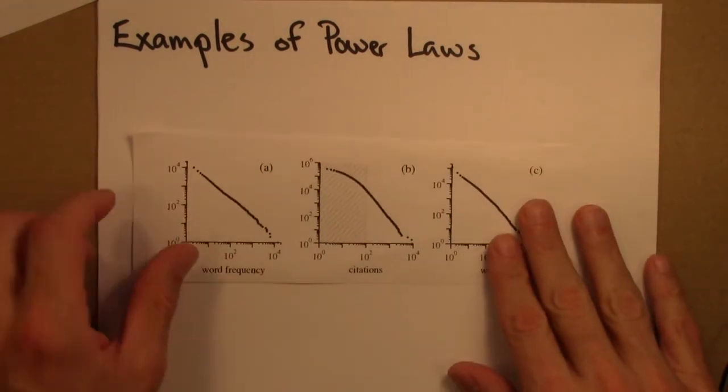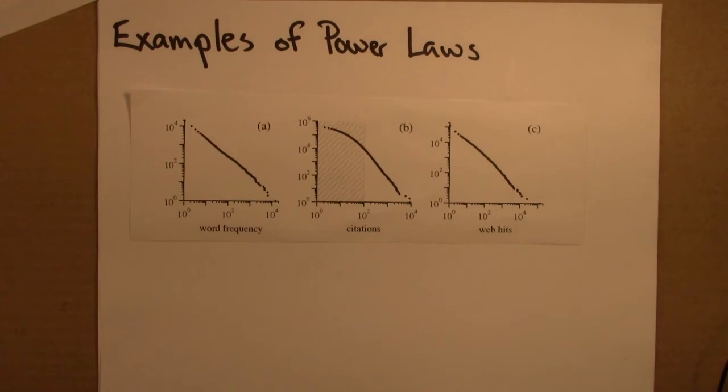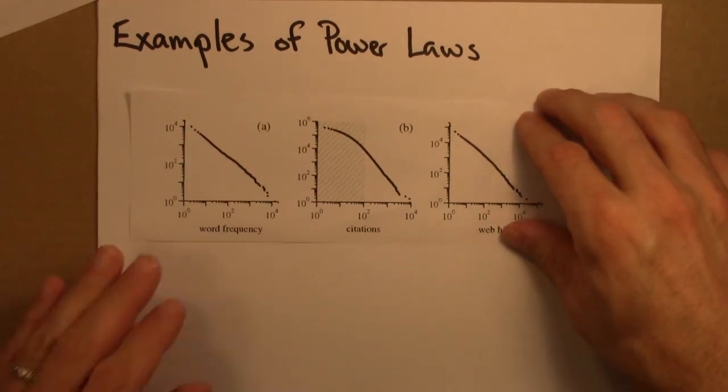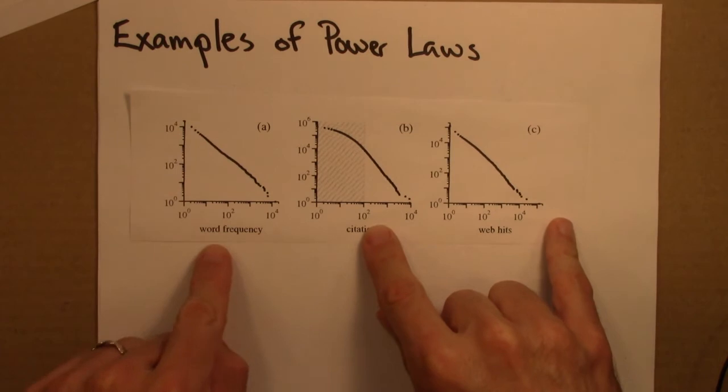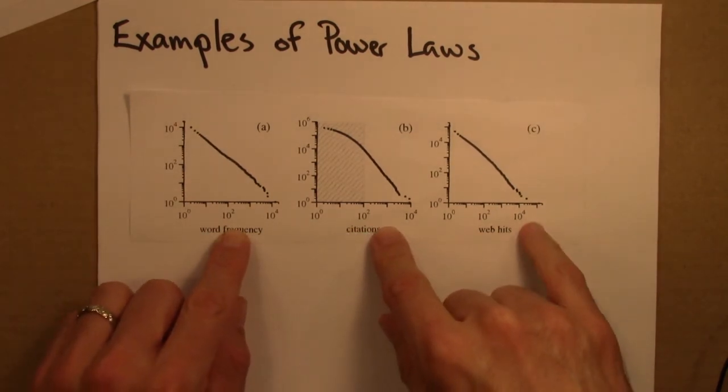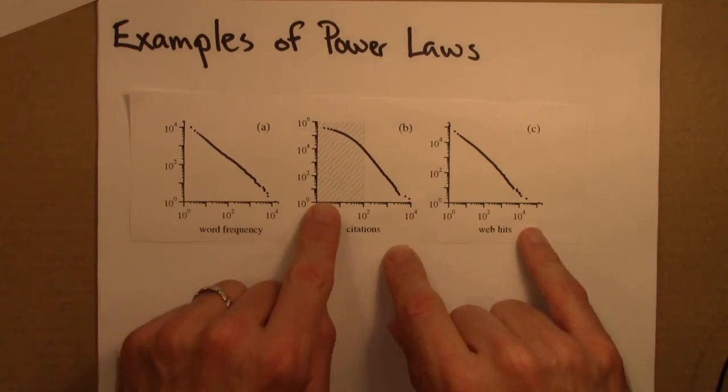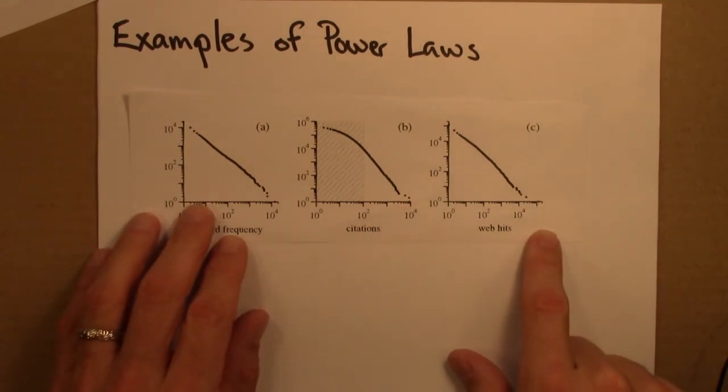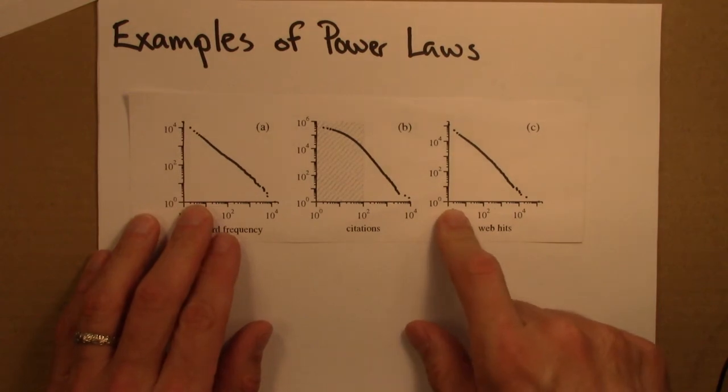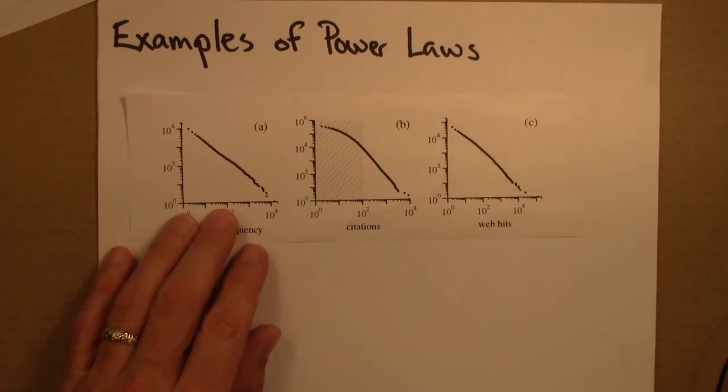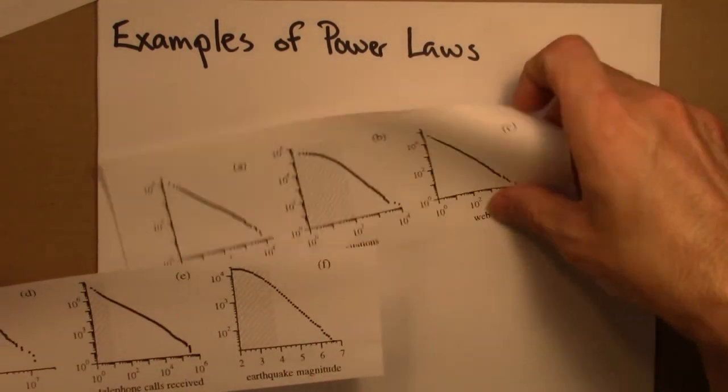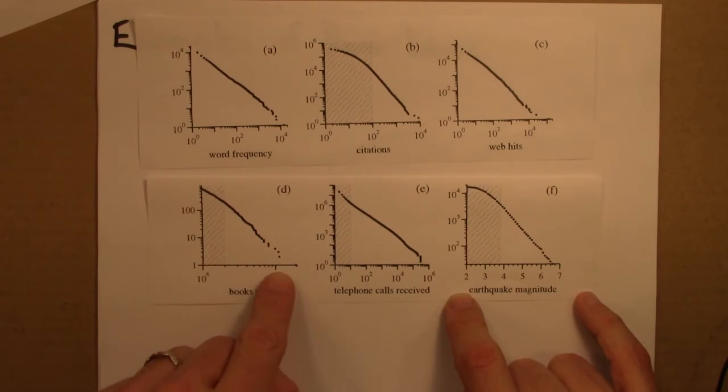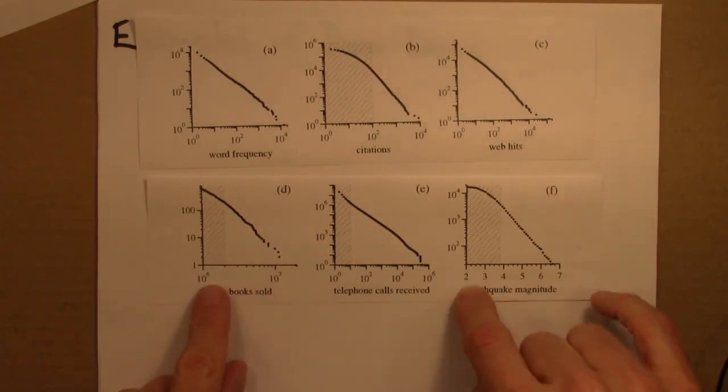So here, these are all from, this is figure 4 in the paper by Newman. So these are all rank frequency or cumulative distribution plots. This is the one we've been looking at. This is word frequency from Moby Dick. Here are citations for scientific papers. There are lots and lots and lots of papers that are cited very few times, and then a few number of papers that are cited many, many times. The story is similar for web hits. There are lots and lots of web pages that get very few hits, and then a small amount is a long tail of more popular web pages. One sees similar patterns for books sold. Many, many books that sell very little, but then a few books that sell many, many, many times. This is 10 million.